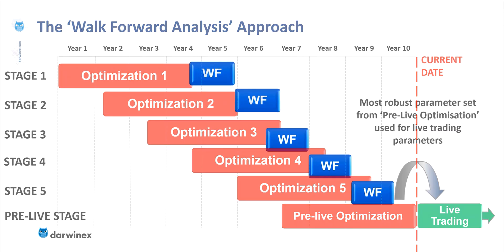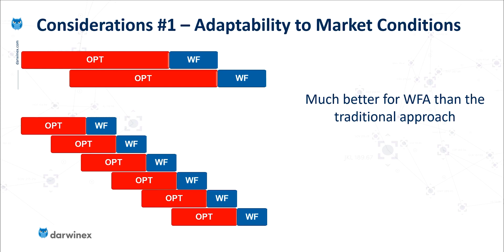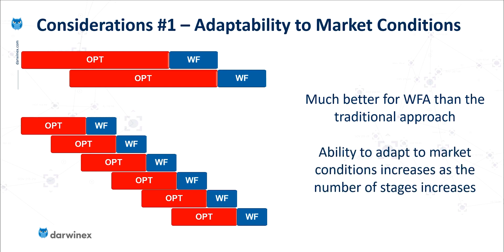So let's now look at what the research set out to accomplish. The first consideration was measuring how adaptable the walk-forward analysis process is to changing market conditions. Walk-forward analysis is generally much better at doing this than when you take a standard optimization approach. But also, the ability to adapt to changing market conditions increases as the number of stages increases, because each optimization phase is now much smaller. And when they're smaller, they're able to adapt to whatever the market is doing at that time, which will generally lead to better results in the walk-forward phase.